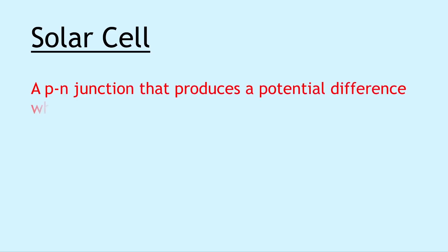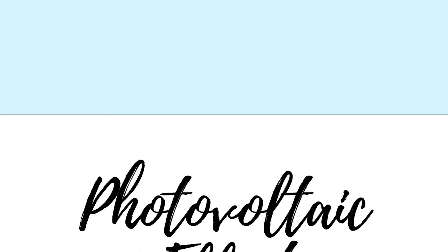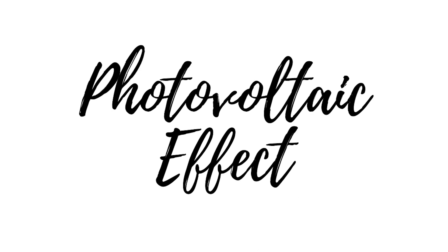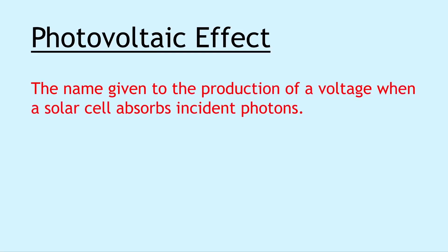Next we have a solar cell, which in a sense is sort of opposite to the LED, and this is a p-n junction that produces a potential difference when photons are absorbed. Or in other words, when light is incident on a solar cell it produces a voltage. Lastly we have the photovoltaic effect, and this is the name given to the production of a voltage when a solar cell absorbs incident photons, i.e. light.